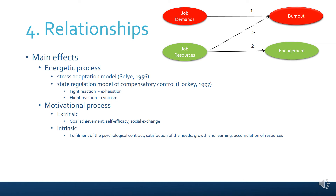According to the same processes, job resources might also decrease burnout. Regarding interaction effects: does the combination of job resources and job demands do something different than just their main effects? Yes. According to the JD-R model, job resources buffer for the negative implications of job demands. For example, social support from colleagues — having the possibility to talk about worries about a project or role ambiguities around a water cooler — might decrease the negative implications of role ambiguity. So job resources can buffer for the negative implications of job demands on the relationship between job demands and burnout.